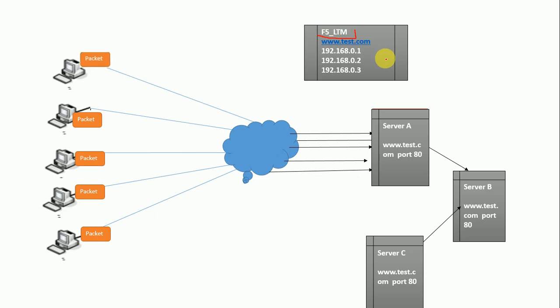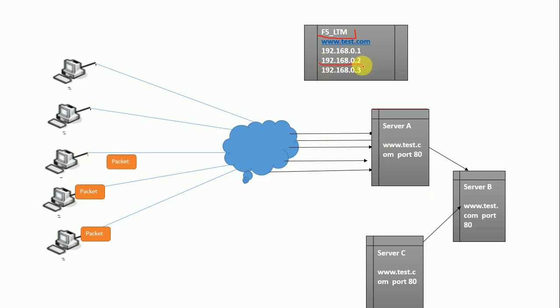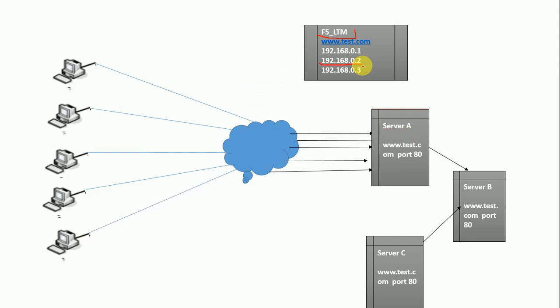Now how are my requests being handled? My packet will come and hit the F5 LTM and go to Server A. Again it does a round-robin process — the second packet goes to F5 LTM, which load balances it to 0.2; the third packet hits F5 LTM and gets load balanced to Server C. The fourth packet gets load balanced to Server A, the fifth to Server B, and so on.